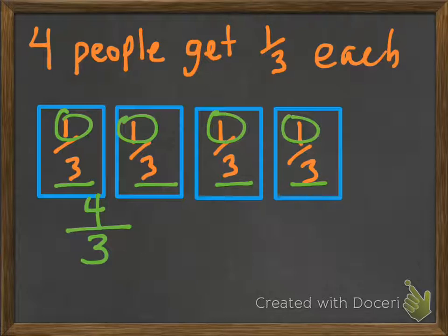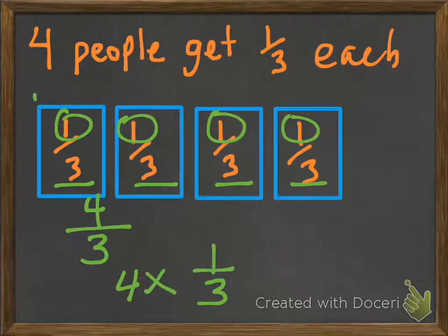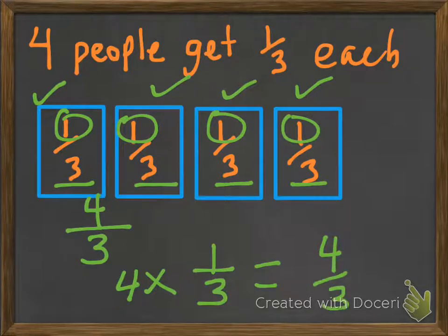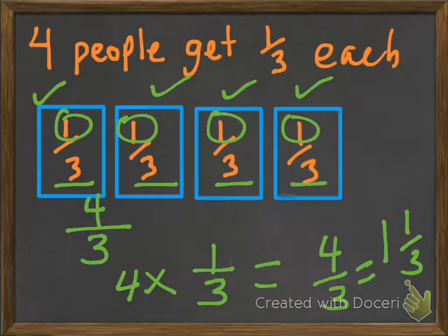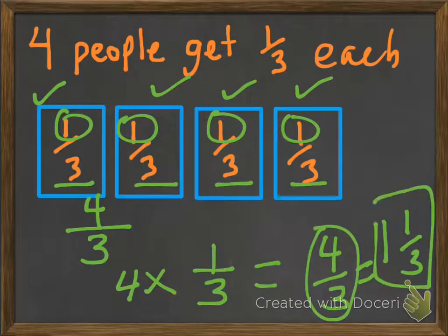Another way of looking at this is, again, since the denominator is the same and each one is a third, we can actually multiply because there are 4 of them. So 4 times 1 third is still going to get us 4 thirds. And if we want to make it into a mixed number, this would actually equal 1 and 1 third. So 4 thirds is an improper fraction; 1 and 1 third is a mixed number.